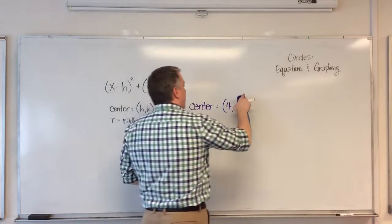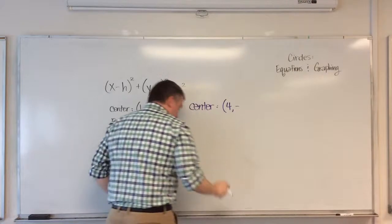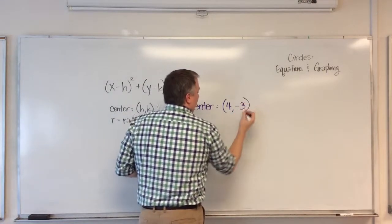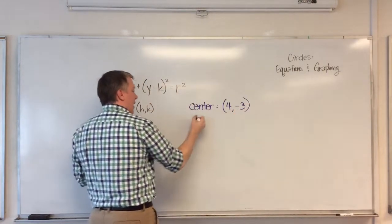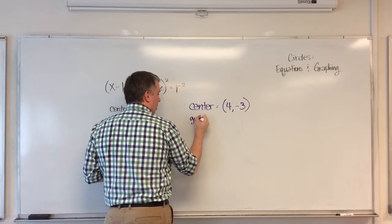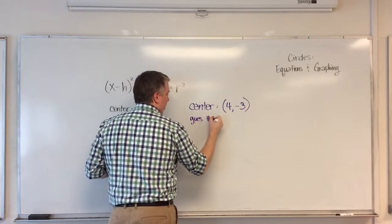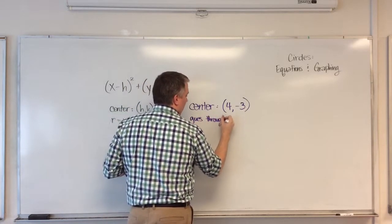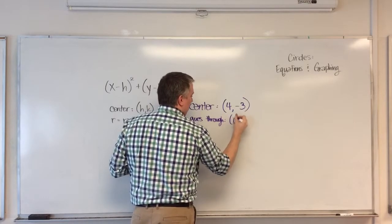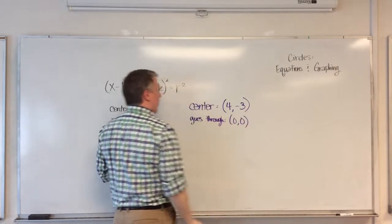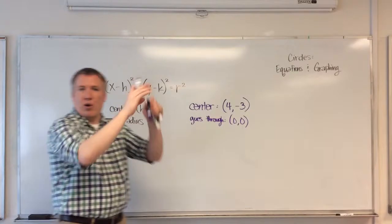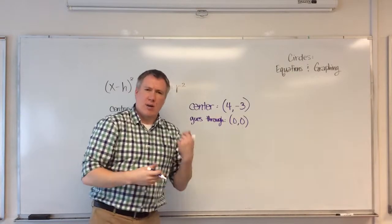Your center is at 4, negative 1. Actually, let's, for the sake of simplicity, for the sake of simplicity, let's do that. And it goes through, the circle goes through, 0, 0. So it centers at some point, and it happens to go through the origin. So how do we figure this out?